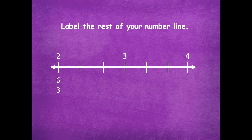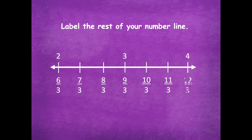Here we go: seven thirds, eight thirds, nine thirds. Notice how nine divided by three equals three — that whole number. Keep going: ten thirds, eleven thirds, and twelve thirds. Twelve divided by three equals that whole number of four. That's the way to check yourself.